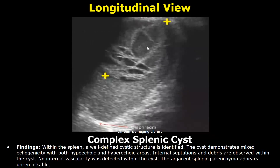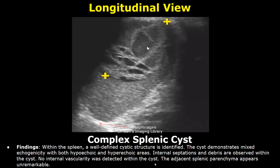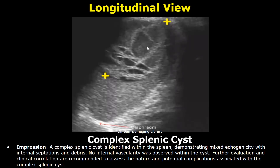Here is a case of complex splenic cyst. The cyst demonstrates mixed echogenicity with both hypoechoic and hyperechoic areas. Internal septations and debris are observed within the cyst. No internal vascularity was detected. In the impression, a complex splenic cyst is identified within the spleen, demonstrating mixed echogenicity with internal septations and debris, no internal vascularity, and it ends with the line of clinical correlation.